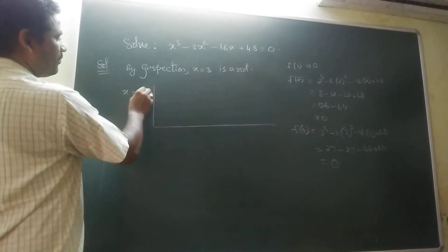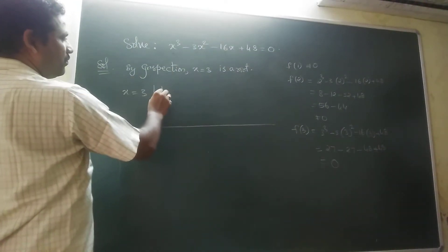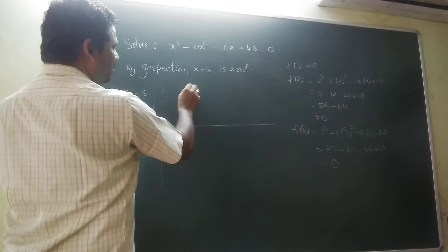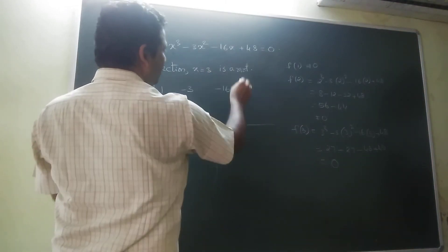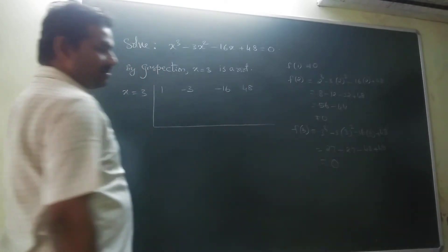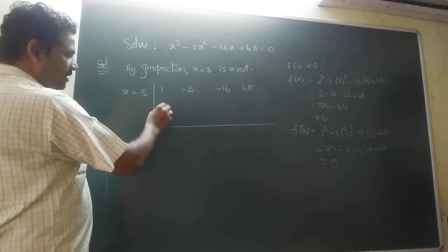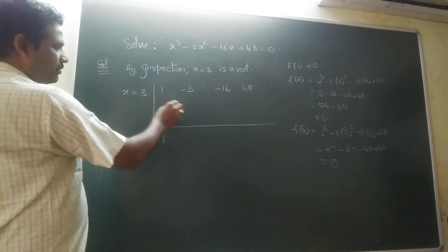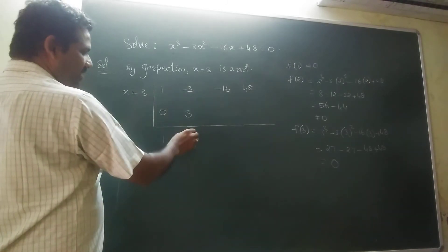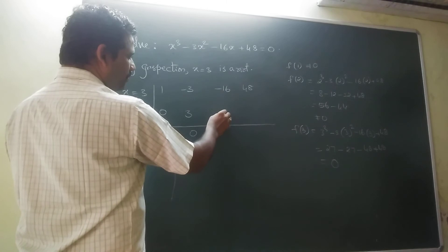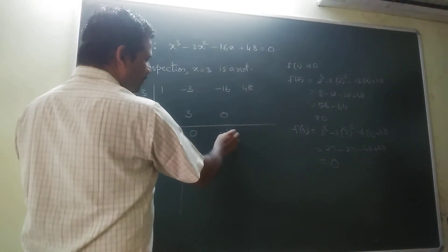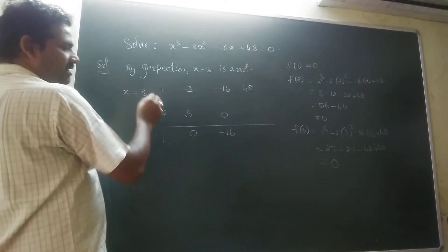So x equal to 3. What is the x square coefficient? 1. x coefficient minus 3, x coefficient minus 16, constant 48. 1 plus 0 is 1. 1 into 3 is 3. 3 minus 3 is 0. 0 into 3 is 0. Minus 16 plus 0 is minus 16. Minus 16 into 3 is minus 48.